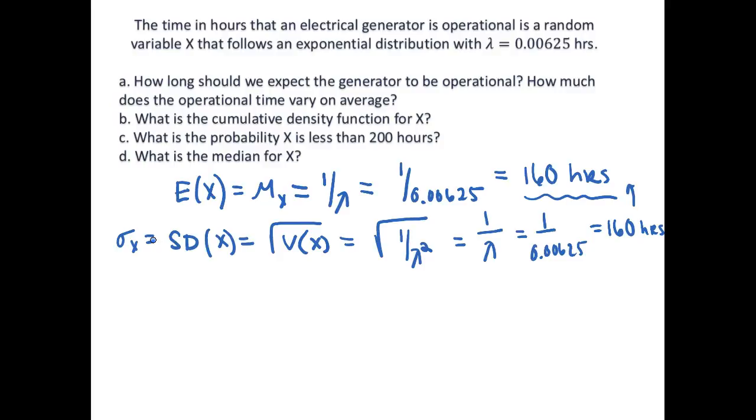Alright so what is then the cumulative density function for X? Well first let's talk about what is the probability density function for an exponential distribution. And this is then equal to lambda e to the negative lambda x. This is the general format for when x is greater than 0. And so our lambda is equal to 0.00625 and if we plug it into the formula we get negative 0.00625 here in the exponent where x is greater than 0.